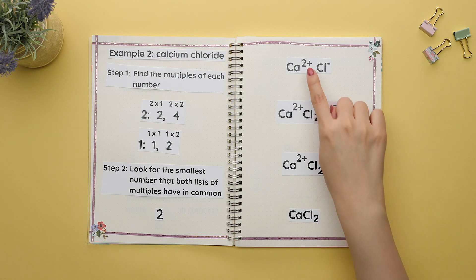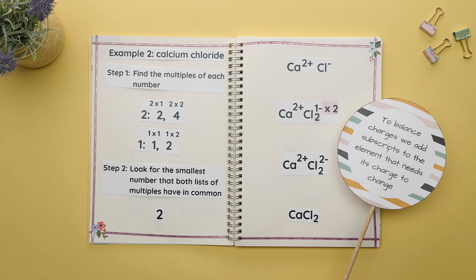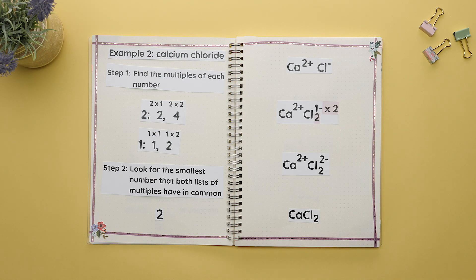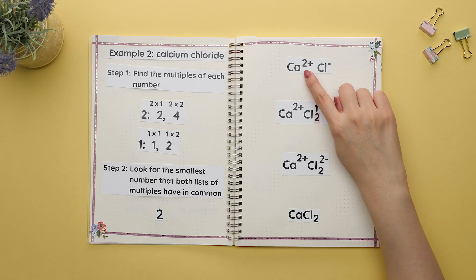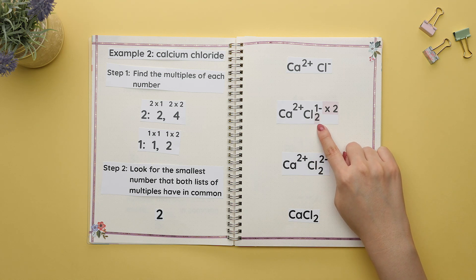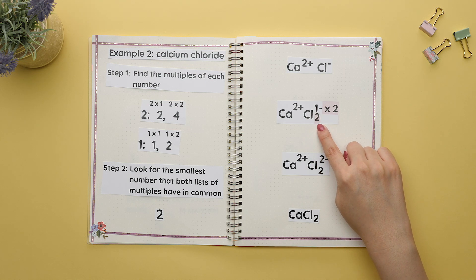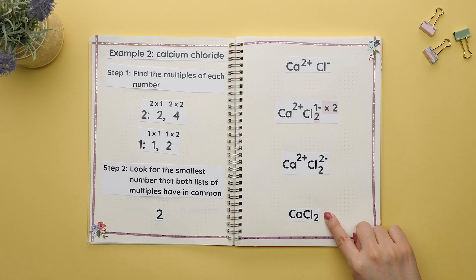This means we want both charges to be two. Again, to balance charges we add subscripts to the element that needs its charge to change. In this case only one element needs to change since the calcium already has a charge of two. So the only element that needs a subscript is the chlorine. We'll place a two subscript on chlorine because for this charge of one to become two it needs to be multiplied by two. This is our chemical formula.